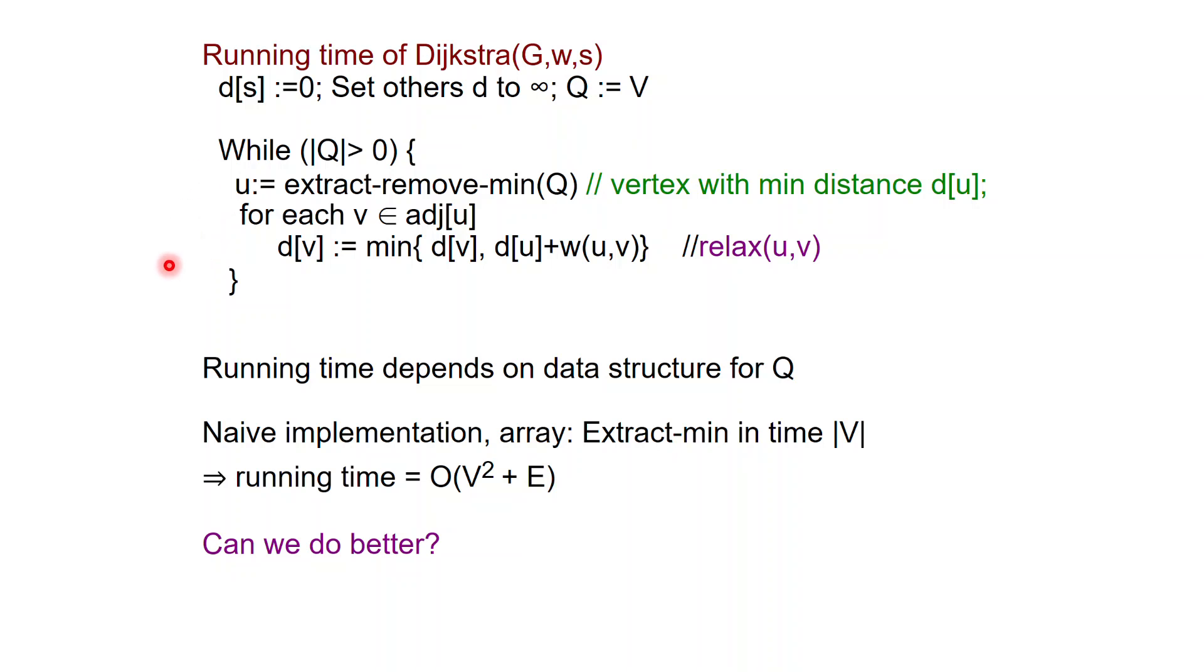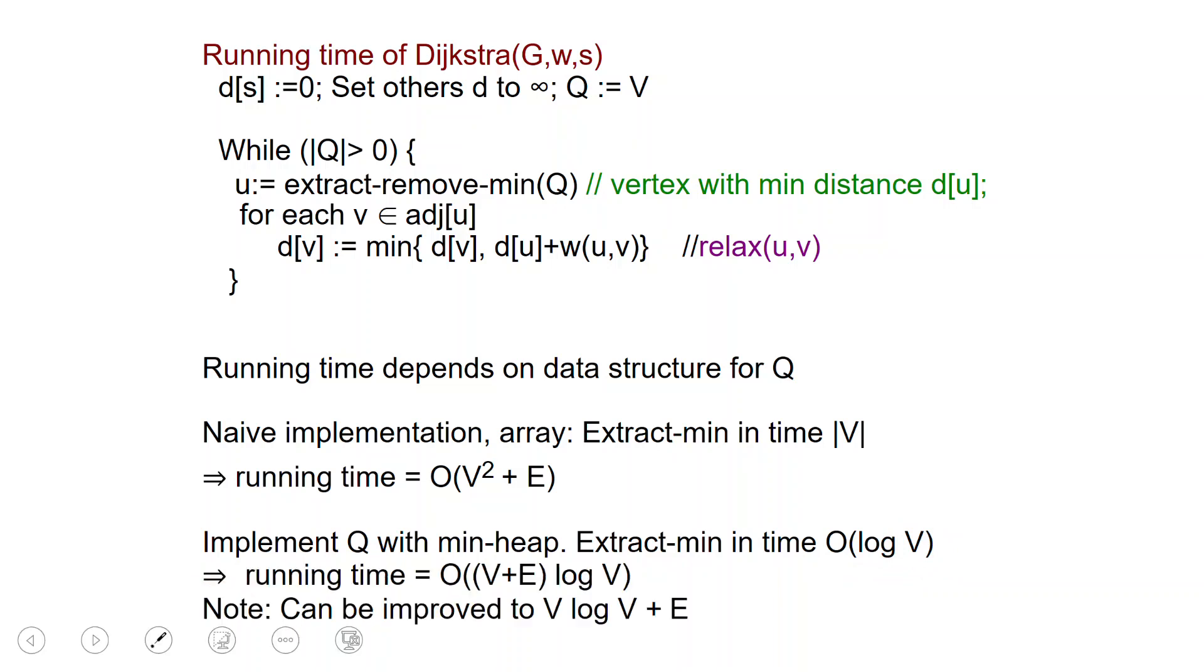Can we do better than this? Of course we can. We saw earlier a much better direction. So using a min heap, we can give a much faster implementation of the queue, which allows us to extract the minimum in time, just logarithmic in the number of nodes. And this will give a total running time for Dijkstra of the order of (V+E) times log V. And in fact, this can be improved somewhat to V log V plus E, but it's not very interesting to us right now. So up to log factor with this implementation of min heaps, the running time is essentially linear in the input.